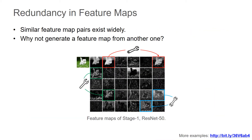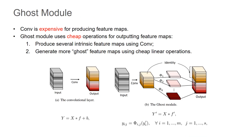In this paper, we aim to design efficient neural networks by reducing the redundancy in feature maps. Convolution is expensive for producing feature maps. We propose the ghost module to use cheap operations to generate the feature maps.